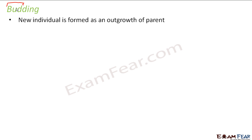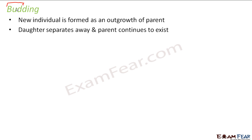What is budding? The word budding is derived from the word bud. Here a new individual is formed as an outgrowth of the parent. That means on the parent's body itself, there will be some outgrowth at a specific part of the body. That outgrowth is known as a bud, and that is why this process is called budding. That outgrowth will gradually grow and become a new individual. The daughter separates away and the parent continues to exist.